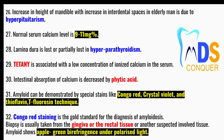Point number twenty-seven: the normal serum calcium level is 9 to 11 milligram percentage. Point number twenty-eight: lamina dura is lost or partially lost in the case of hyperparathyroidism. Point number twenty-nine: tetany is associated with a low concentration of ionized calcium in the serum.